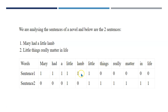For example, in a document we have two sentences: 'Mary had a little lamb, little things really matter in life.' If you have 1000 sentences and many different words, you will have ones and zeros. Not all words appear in all sentences, so there are many zeros. This is information retrieval, and this is the sparse matrix.